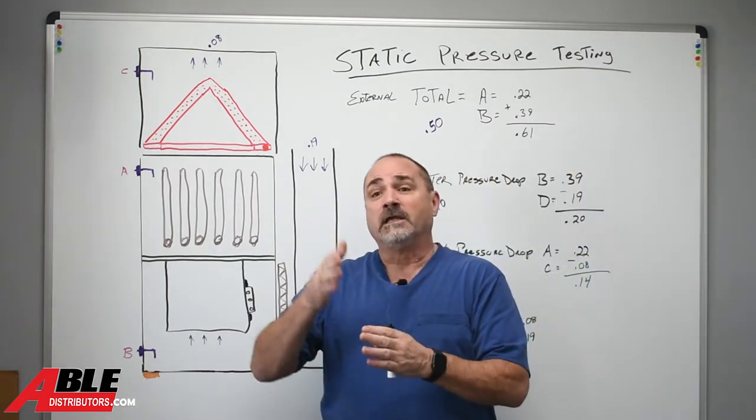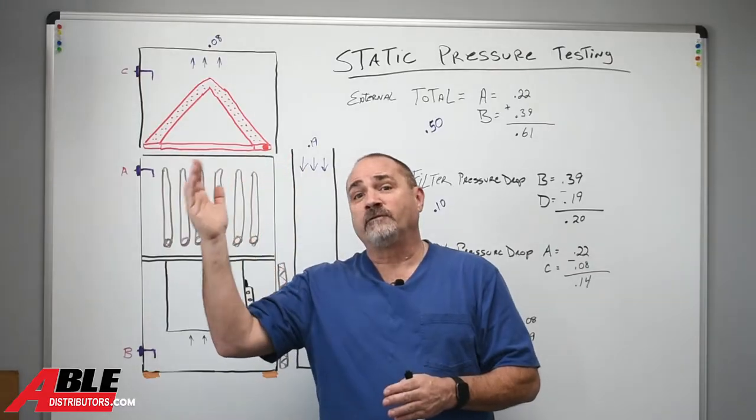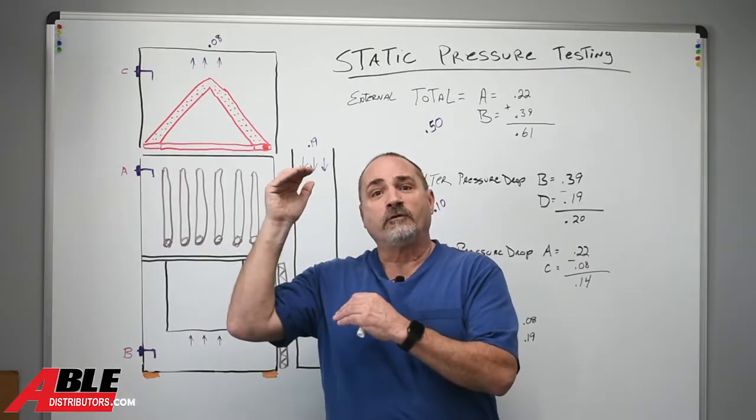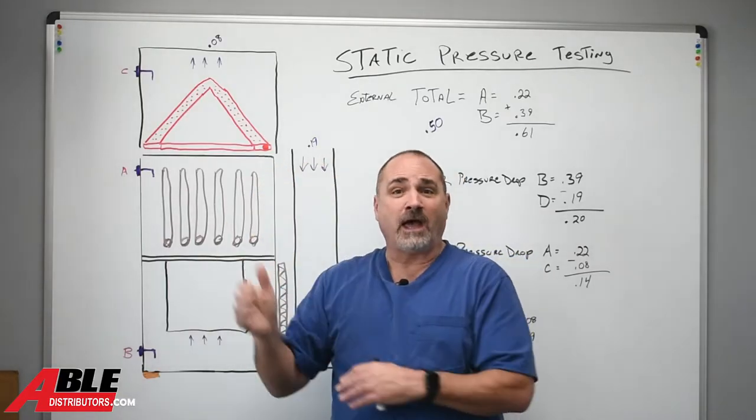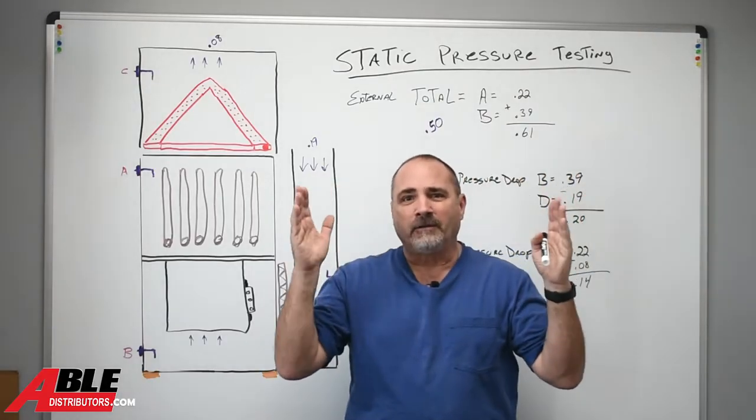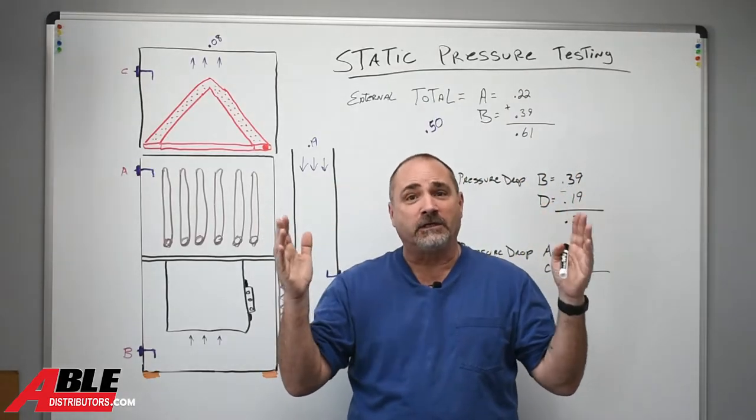You can literally go from a 0.50 external static pressure, and by external it's everything outside the furnace. When you go from a 0.5 to a 1.0, that little bit of difference honestly is not that hard to achieve. A few mistakes in that duct work and you're going to hit it.